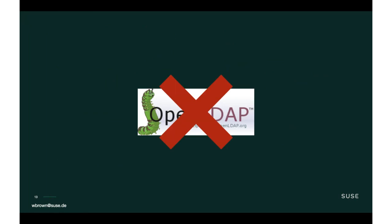Since we have this migration tooling now, we can finish completing the removal of OpenLDAP server from SLE. We'll still need to provide the OpenLDAP client libraries because so many things depend on it, but we will be able to complete removing OpenLDAP server. This is going to have impact on our customers who currently use OpenLDAP as their servers, but we think that they'll end up in a better position overall once they've moved over to 389.